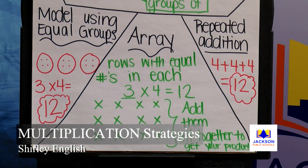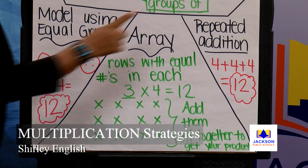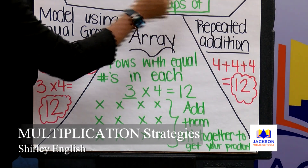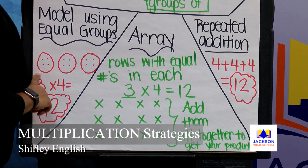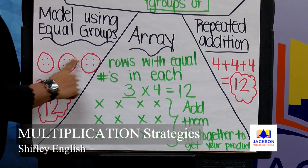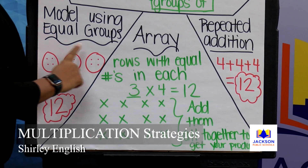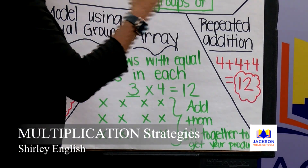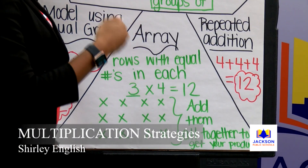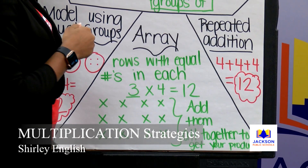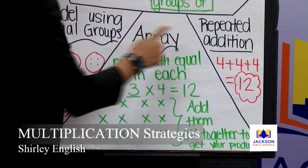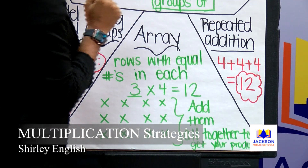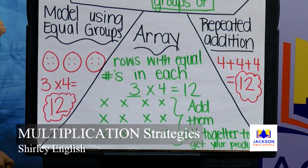Another strategy that you can use is repeated addition. With repeated addition, I will look at my model and see how many objects I have in each group — four, four, and four. Repeated addition is just using that same number over and over to get your answer. So four plus four plus four would give me my product, which is twelve.